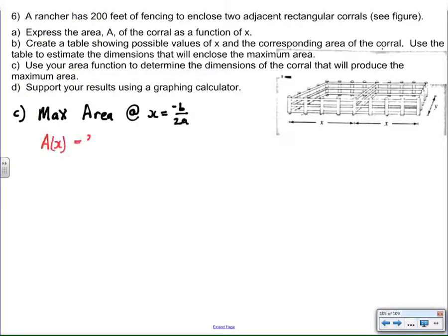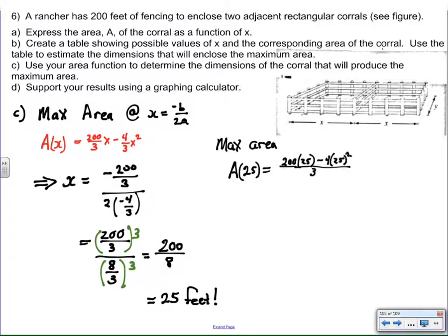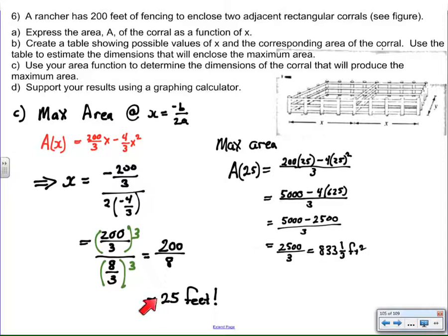Now all I have to do is use my equation to verify it. So the maximum area occurs at the axis of symmetry, so I just find the b and the a values, and multiply top and bottom by 3 to get a nice clean fraction, and sure enough, 25 feet, just like I said. Then I evaluate A of 25 to find the area, maximum area, and that's 833 and 1 third. This is bigger than 800, so I know it's maximum, and it's not much bigger, so it's all consistent with what I know about parabolas.